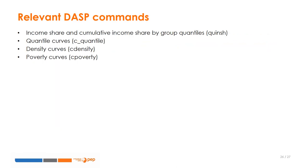The DASP Stata package is a user-friendly and comprehensive tool for distributive analysis. Related to the concepts seen in this course, the command QUINCH can be used to estimate the income share and the cumulative income share by group quantiles. To draw quantile curves, the command CQUANTILLE can be used. Density curves can be drawn with the command C Density, while poverty curves are easily drawn with the C POVERTY command.